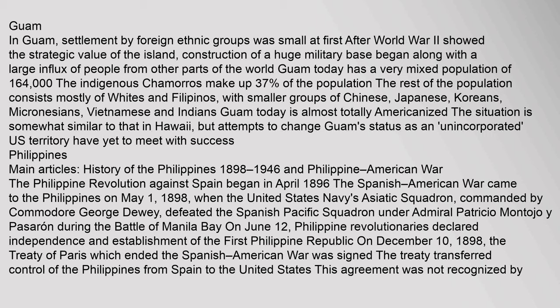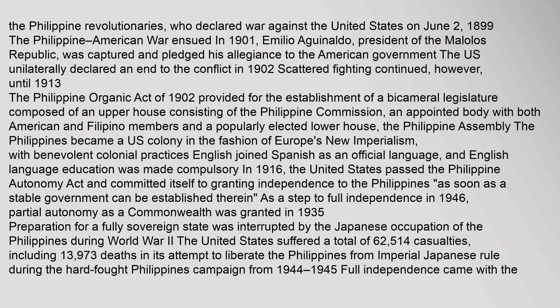Philippines: The Philippine Revolution against Spain began in April 1896. The Spanish-American War came to the Philippines on May 1, 1898, when the United States Navy's Asiatic Squadron, commanded by Commodore George Dewey, defeated the Spanish Pacific Squadron under Admiral Patricio Montojo y Pasarón during the Battle of Manila Bay. On June 12, Philippine revolutionaries declared independence and established the First Philippine Republic. On December 10, 1898, the Treaty of Paris, which ended the Spanish-American War, was signed, transferring control of the Philippines from Spain to the United States. This agreement was not recognized by the Philippine revolutionaries, who declared war against the United States on June 2, 1899.